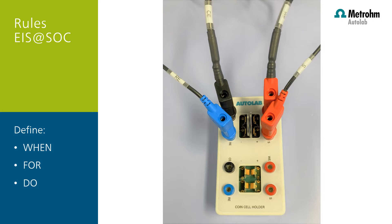The 'do' defines what should happen when the rule condition is met. There are two options: Stop command — the current command is stopped as soon as the rule is triggered and the procedure continues with the next command — or stop the procedure, where the complete procedure is stopped as soon as the rule is triggered. In this example, we program Intello to automatically start an impedance measurement when the potential of a battery reaches a certain threshold. We can do this after a charging and also after a discharging cycle, so we measure the impedance of the battery at a certain state of charge (SOC).